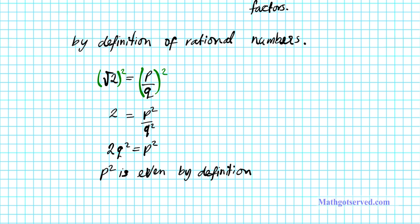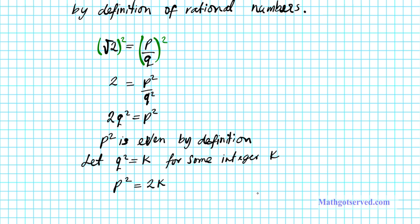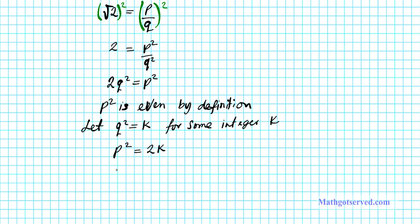Let q squared equal k for some integer k. Since p squared is even, we can express p squared as p squared equals 2k. Now if p squared equals 2k, we know that p times p equals 2 times k. Since the right side of this equation is 2 times k, that automatically tells us that 2 divides the right side. Since 2 divides the right side, that implies that 2 has to divide p — the left side of the equation. Whatever divides the right side has to divide the left side also.